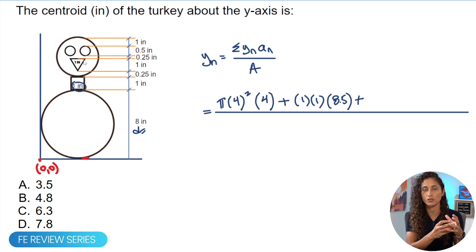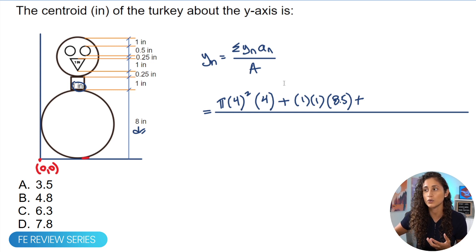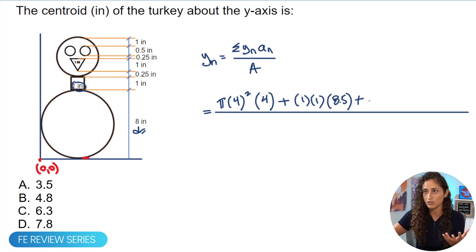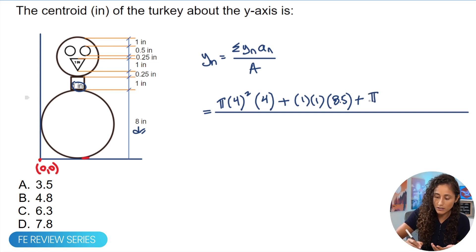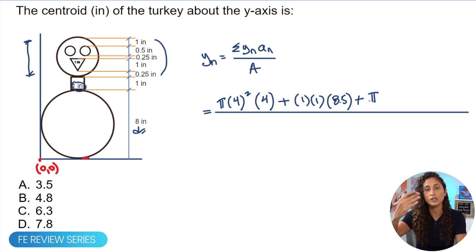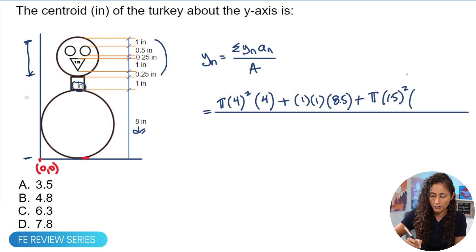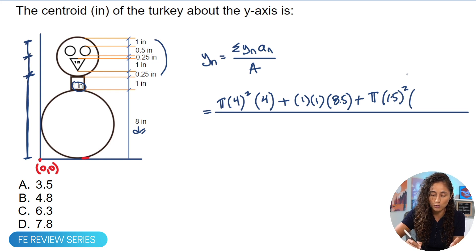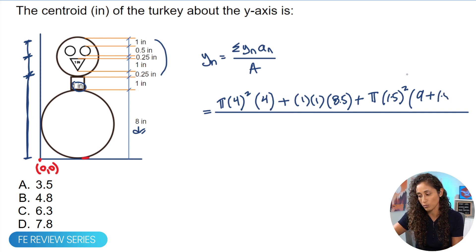Now we add the second large circle. Be careful — there are three shapes inside this circle, and whenever a shape is inside another shape we subtract it, but only from that circle, not the whole equation. The area of this circle is π × 1.5² (radius = 3/2 = 1.5, since the diameter is 3 inches). Its centroid ȳ_n is the total distance to the origin: 8 + 1 + 1.5 = 10.5.